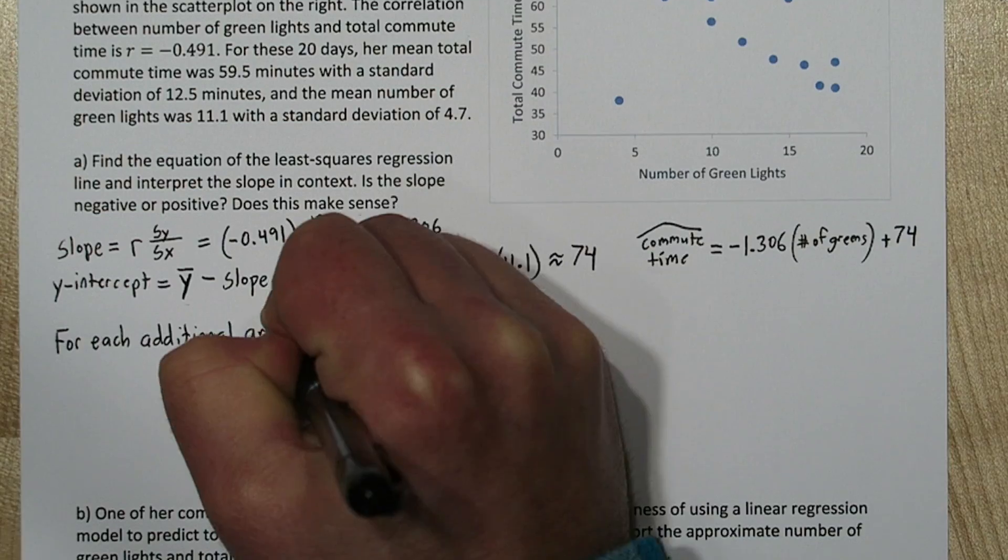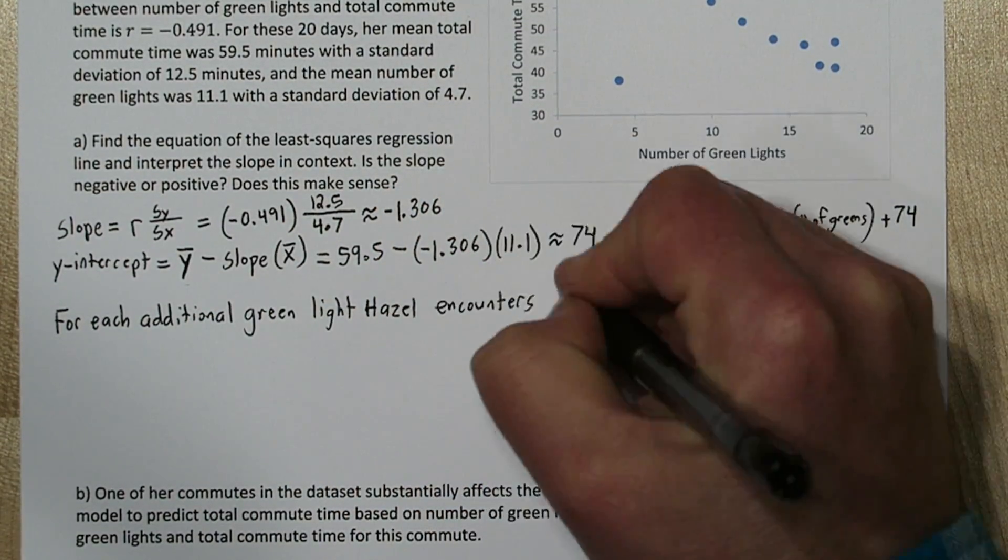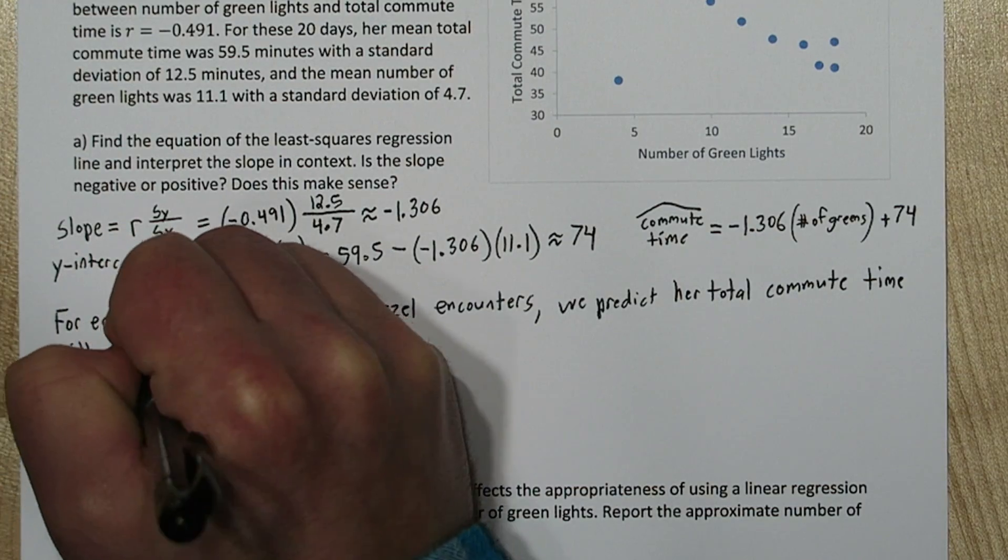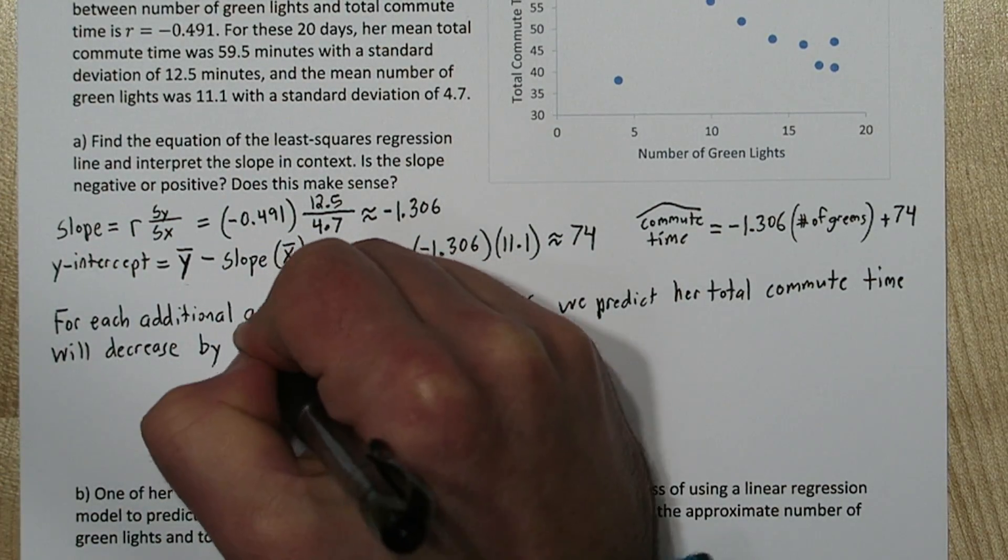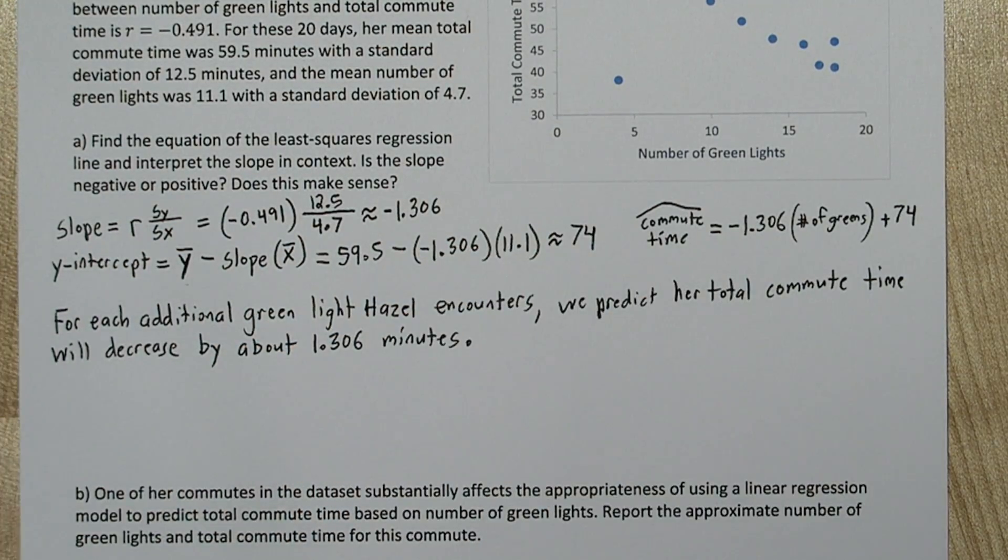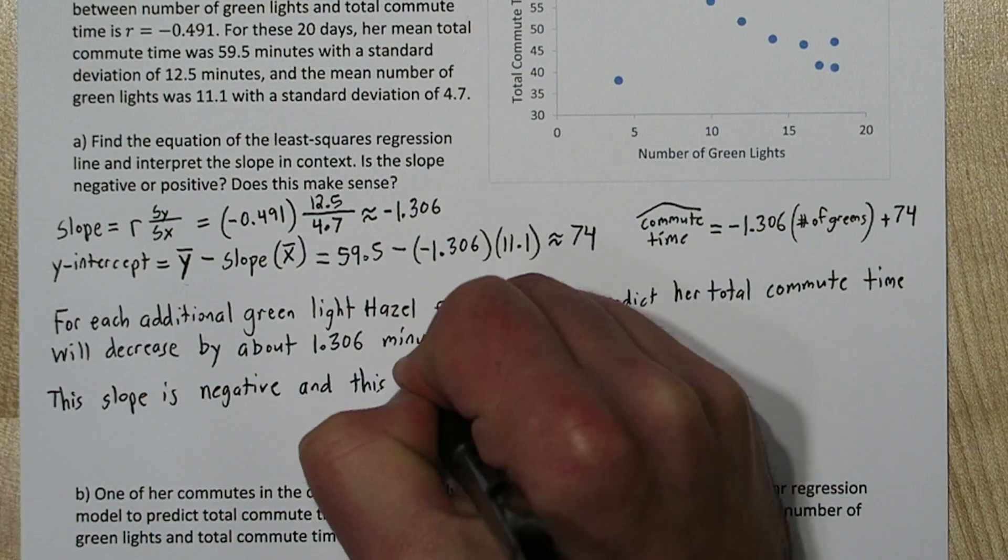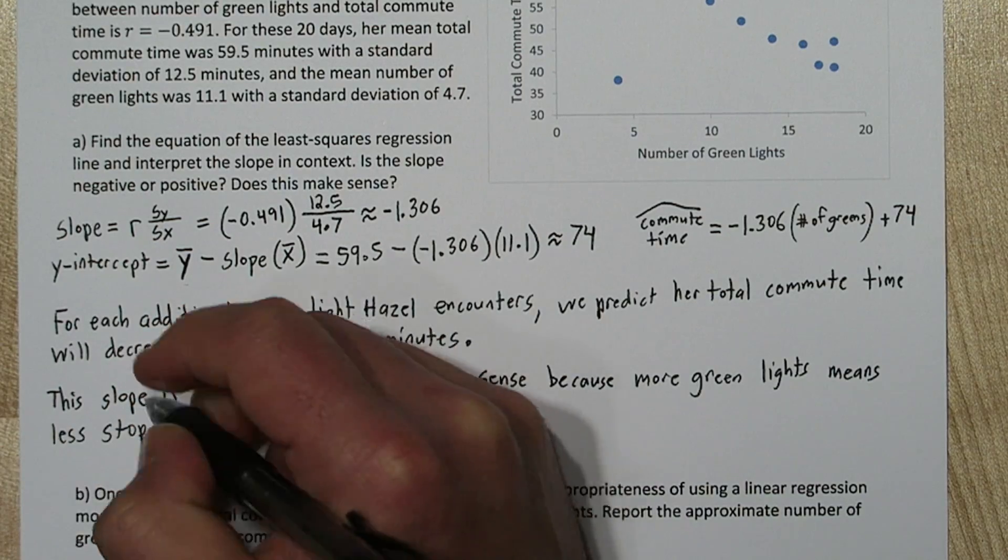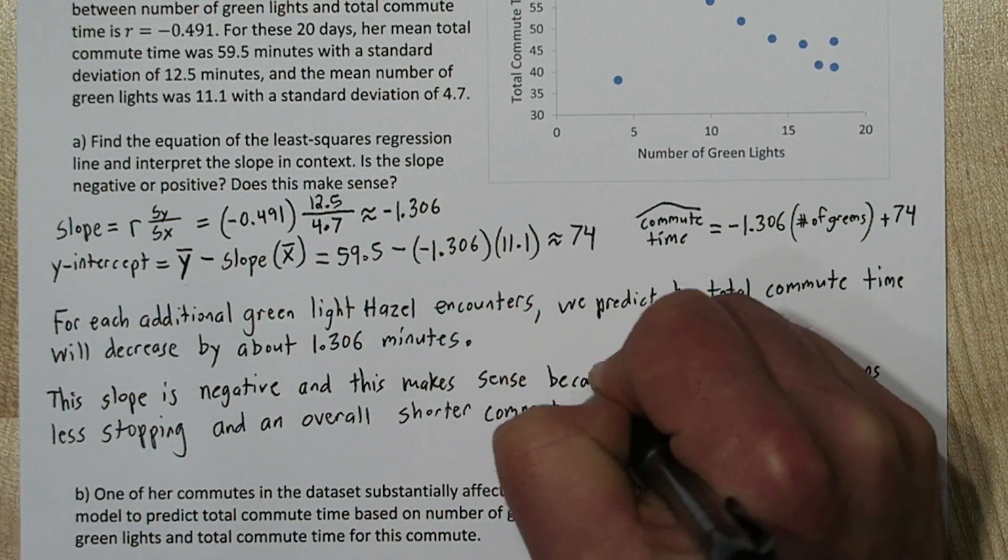Now let's interpret this slope. So for each additional green light Hazel encounters, we predict her total commute time will decrease by about 1.306 minutes. Now this slope is negative, and this makes sense because the more green lights Hazel encounters, the less she has to stop, and this means a shorter commute time.